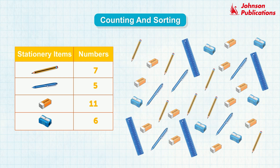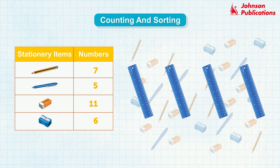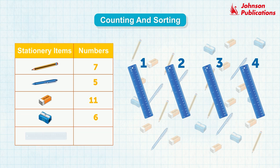Let's count all the rulers. 1, 2, 3, and 4. There are 4 rulers. We will write the number of rulers here.